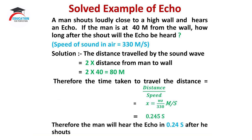The time taken to travel the distance is given by the formula: time equals distance divided by speed, which equals 80 divided by 330 meters per second. In this way, we can calculate the time taken to travel the distance, which is equal to 0.245 seconds. Therefore, the man will hear the echo in 0.24 seconds after he shouts.